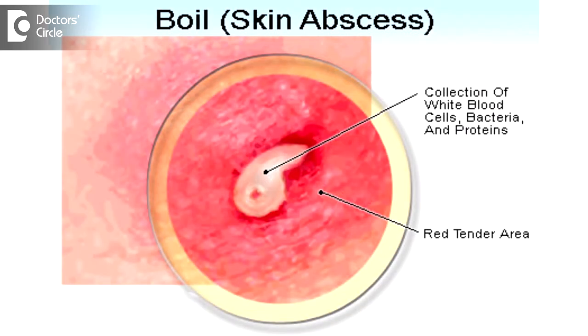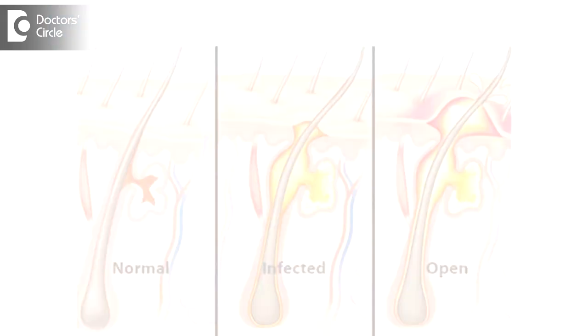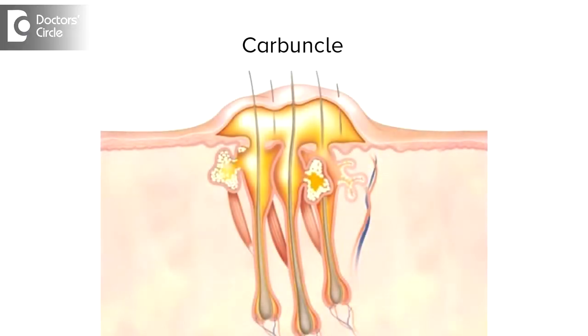Boils are nothing but furuncles. It is nothing but an infected pilosebaceous unit — we call it a furuncle. And a carbuncle is nothing but an infection of a group of pilosebaceous units, where multiple draining units will be there.